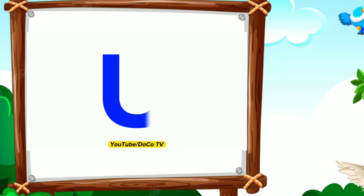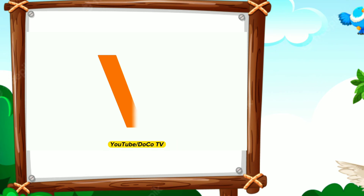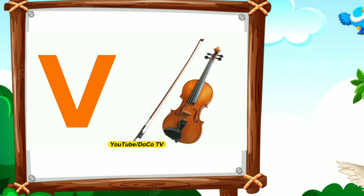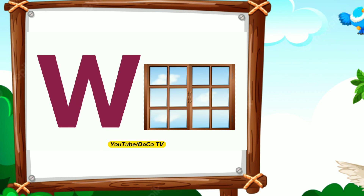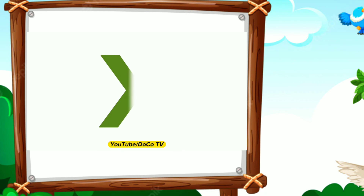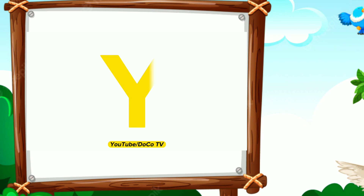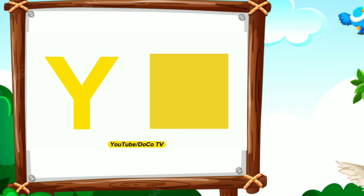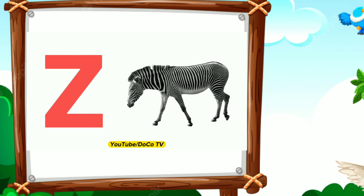U. U for umbrella. V. V for violin. W. W for window. X. X for xylophone. Y. Y for yellow. Z. Z for zebra. Bye-bye.